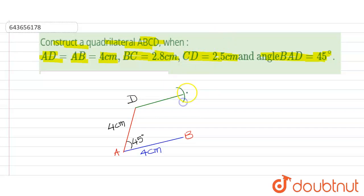Name it as C. And similarly from B we draw a line BC which equals 2.8 cm.